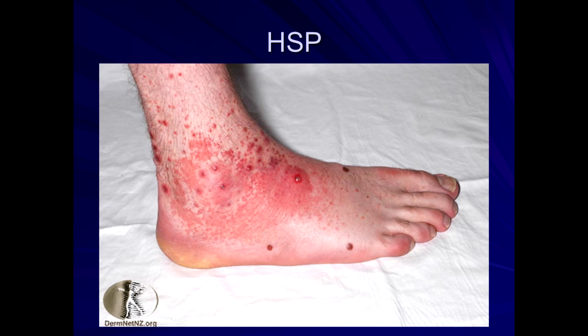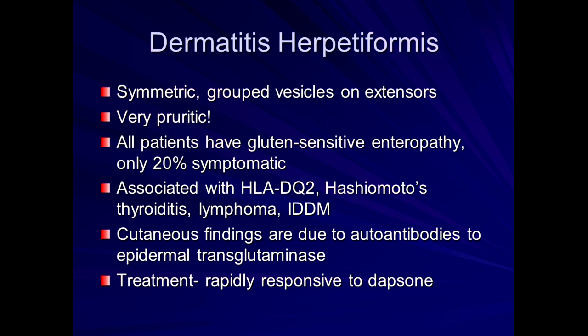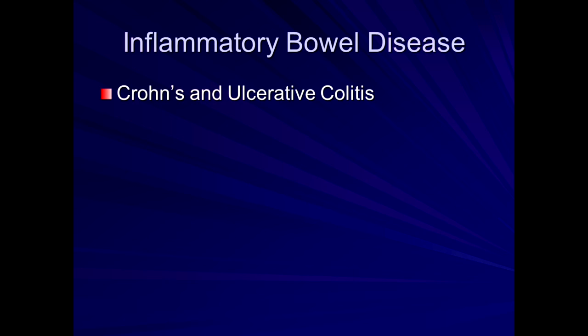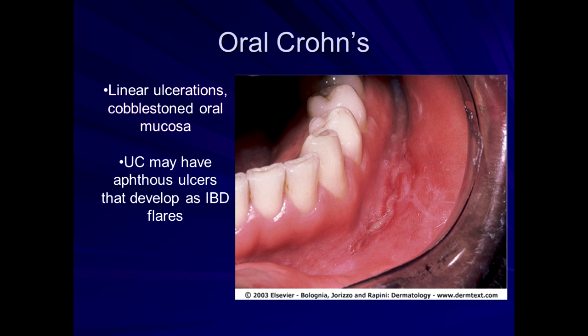Dermatitis herpetiformis is one of the most severely itchy conditions we know — grouped vesicles that can be anywhere on the body, often on the buttocks. They are associated with HLA-DQ2, Hashimoto's thyroiditis, lymphoma, and insulin-dependent diabetes. The cutaneous findings are due to autoantibodies to an enzyme called transglutaminase. Systemic dapsone is considered the treatment of choice. This is common in our gluten-sensitive enteropathy patients. The key is the clinical history — do you have gluten sensitivity? Are you itching? A skin biopsy would help confirm this.